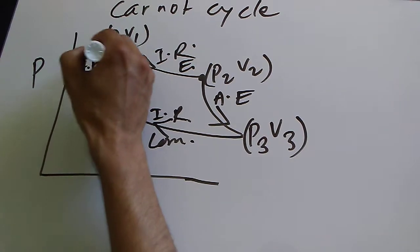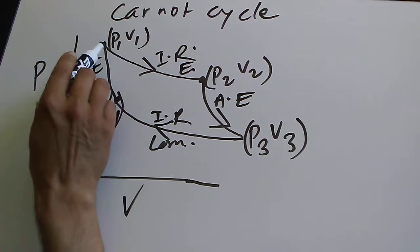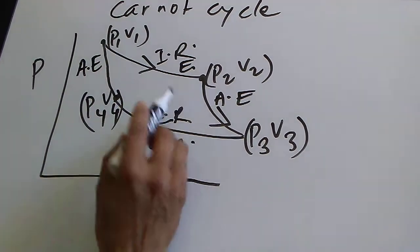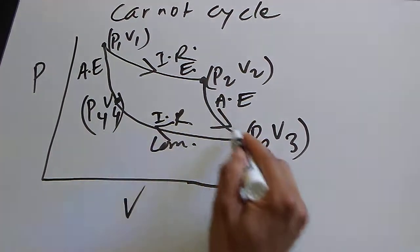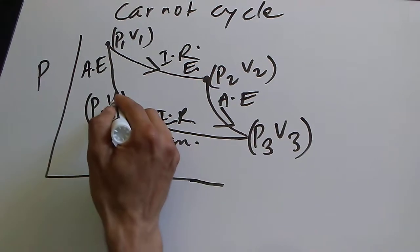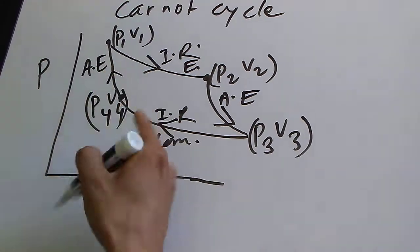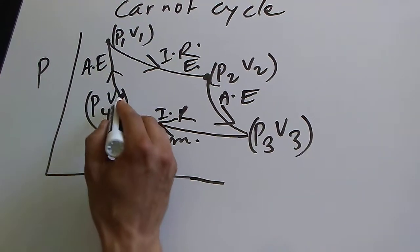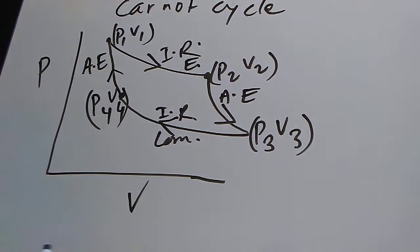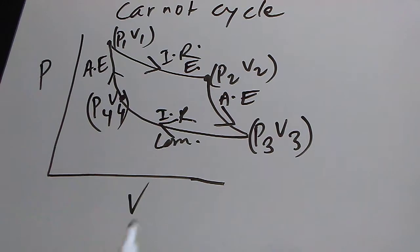This is an isothermal expansion curve, this is an adiabatic expansion curve, this is an isothermal compression curve, and this is an adiabatic compression curve.